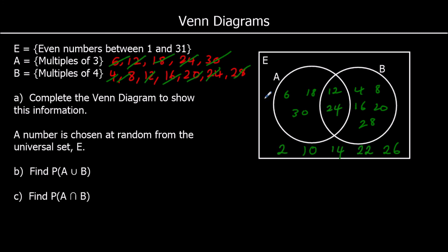So there should be 15 numbers. Let's check. 1, 2, 3, 4, 5, 6, 7, 8, 9, 10, 11, 12, 13, 14, 15. There are 15 even numbers between 1 and 31. We've got 15 numbers in our Venn diagram. So we should be correct.